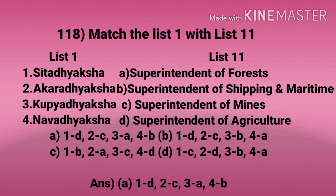Question 118. Match List 1 with List 2. List 1: Sita Adhyaksha, Agara Adhyaksha, Kupya Adhyaksha, Nava Adhyaksha. List 2: Superintendent of Forests, Superintendent of Shipping and Maritime, Superintendent of Mines, Superintendent of Agriculture. Answer: Option A — 1D, 2C, 3A, 4B.